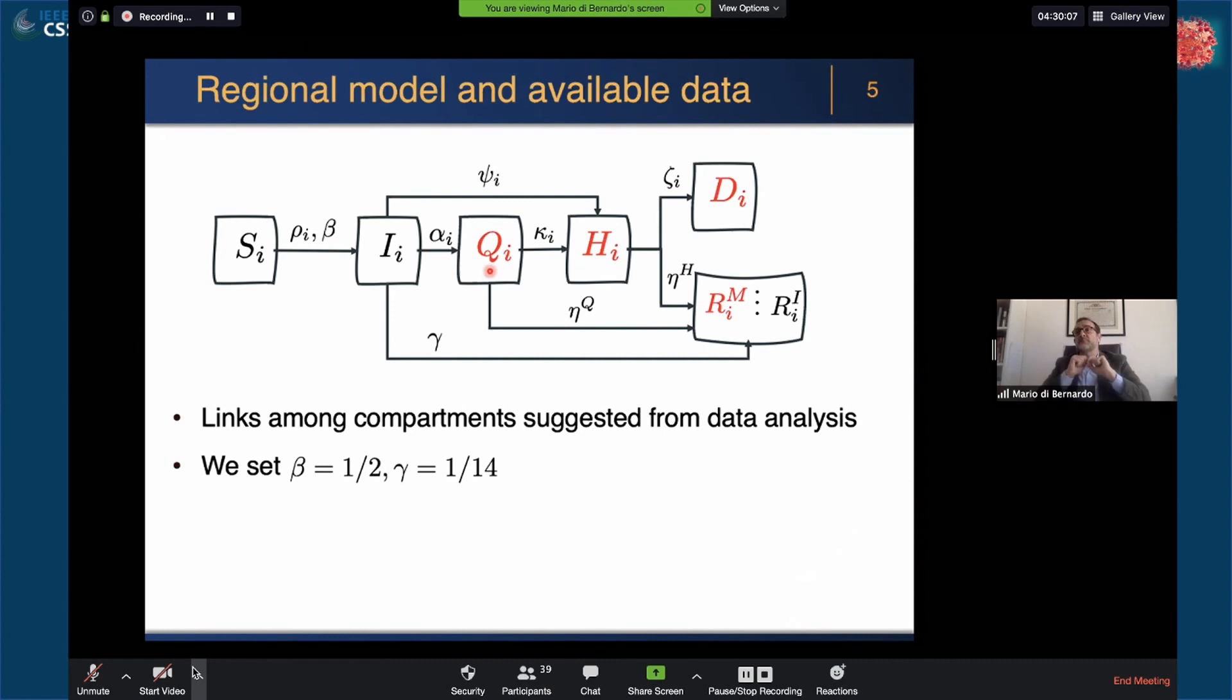What are the assumptions? We fixed some parameters from consensus we found in the literature, in particular beta and gamma, the two parameters you see here. And also we made an ansatz. As Beppe said earlier, the parameters must change, and they must change over certain time windows.